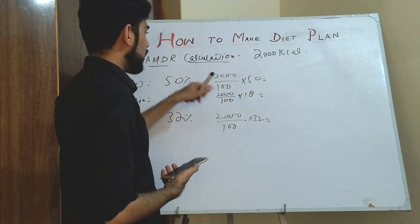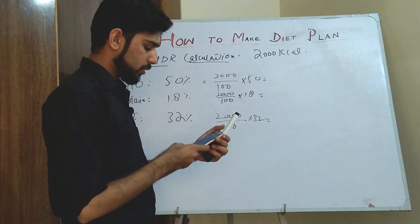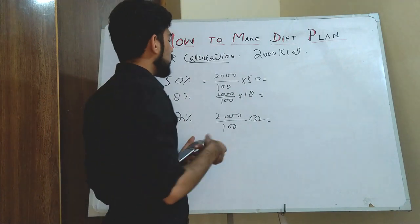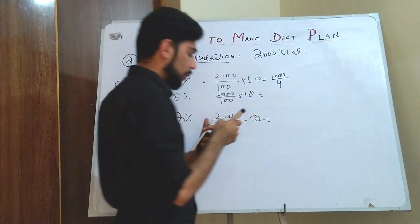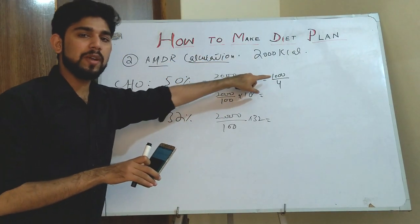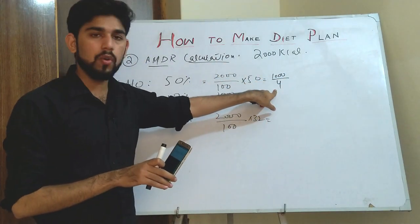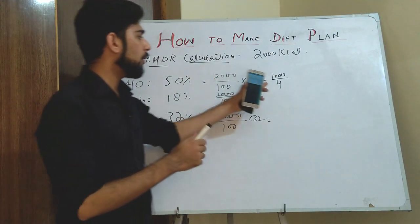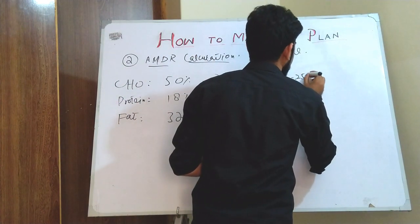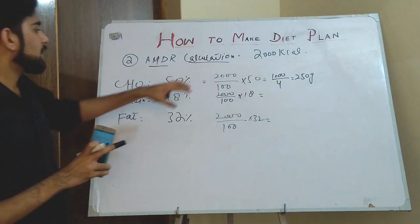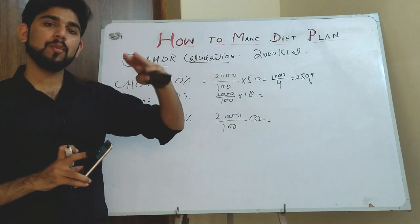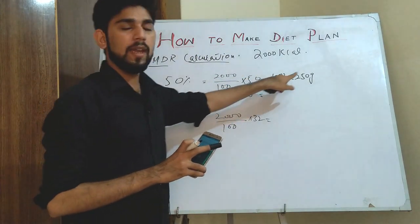For carbohydrate at 50 percent: 2000 divided by 100 times 50 comes to 1000 calories. We then divide by 4 to convert to grams, because one gram of carbohydrate gives 4 calories. So 1000 divided by 4 gives 250 grams of carbohydrate.